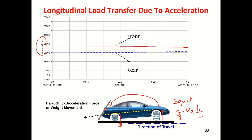For a given ax, if the h value is very high, squatting is high. If the wheel base length L is short, it will promote more squat. If L is very long, the squat phenomenon is low.